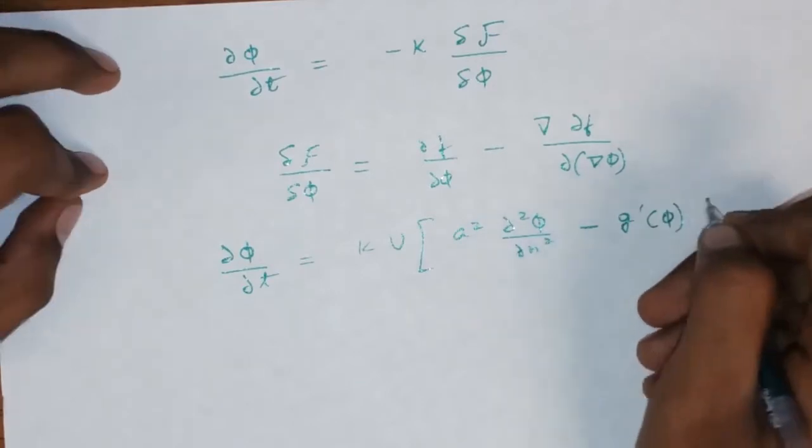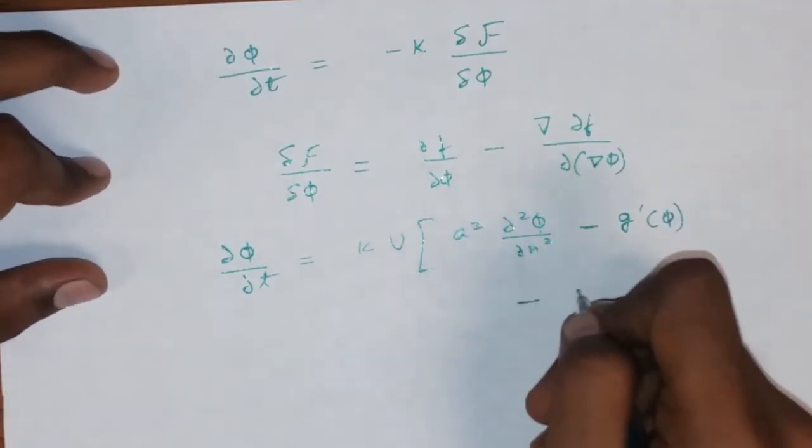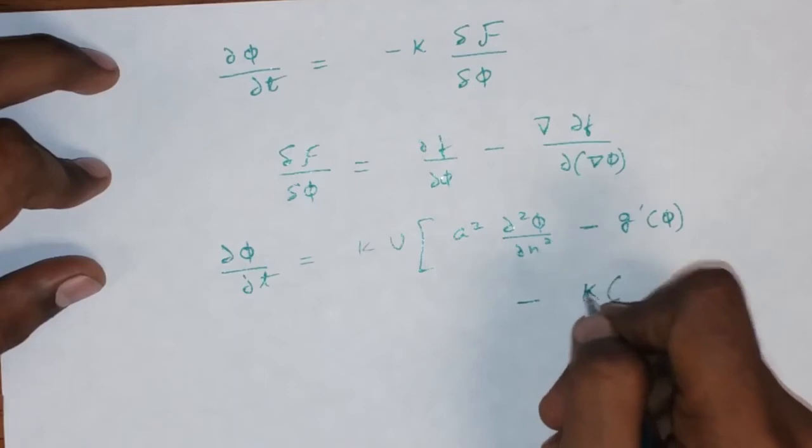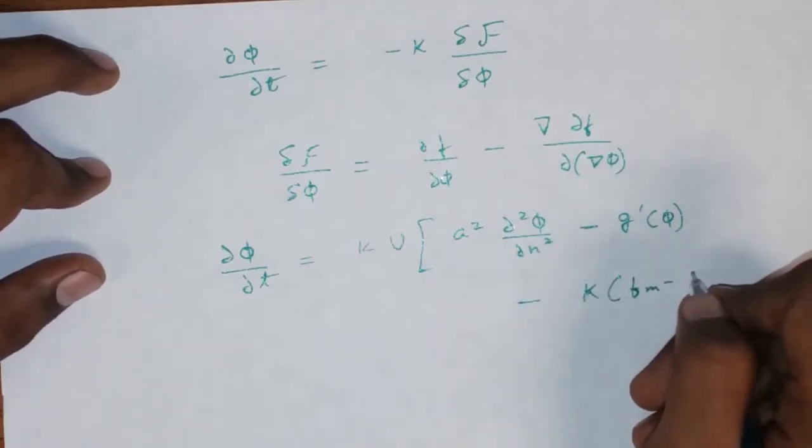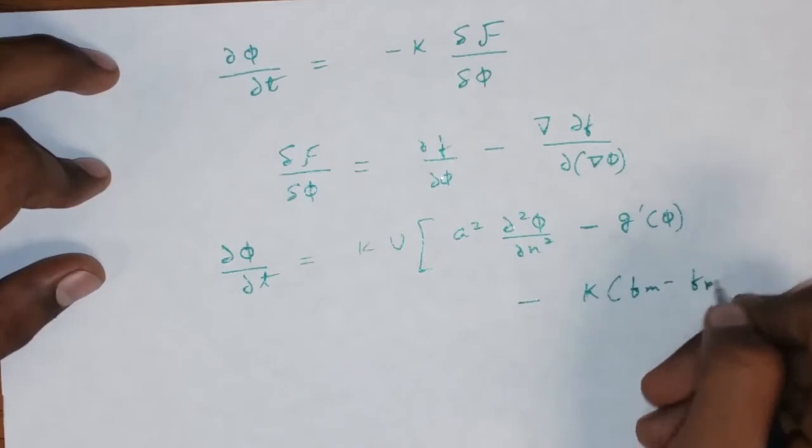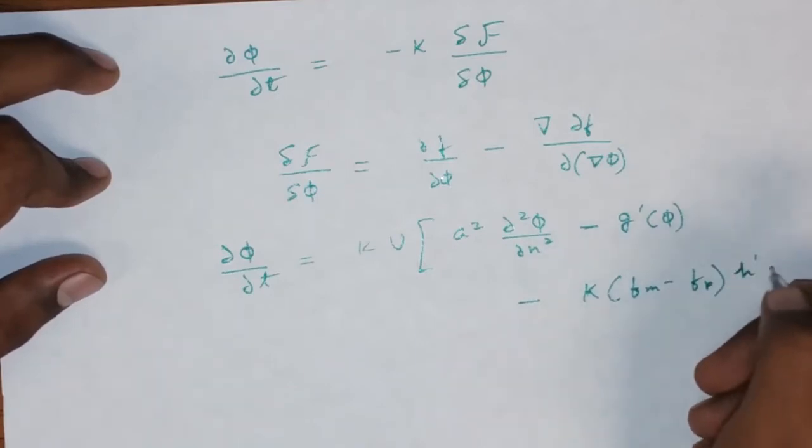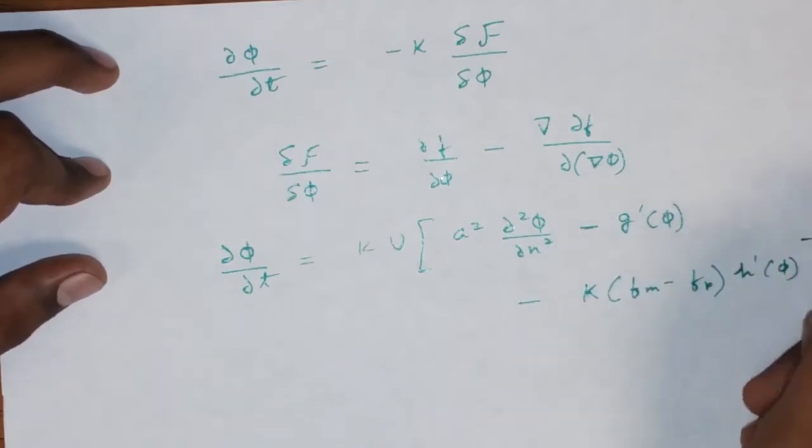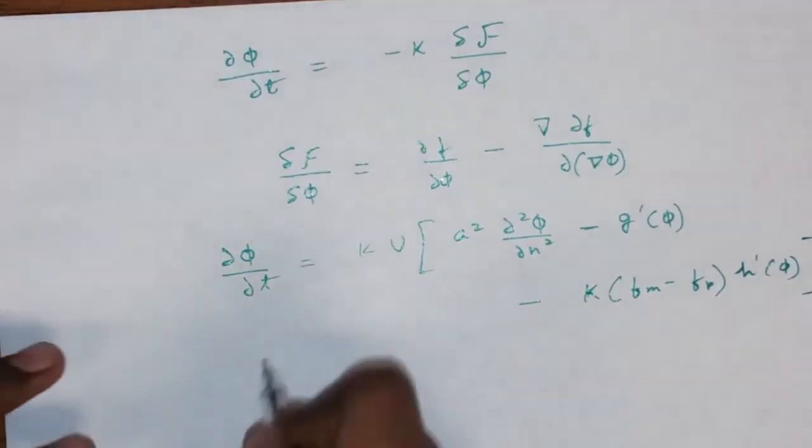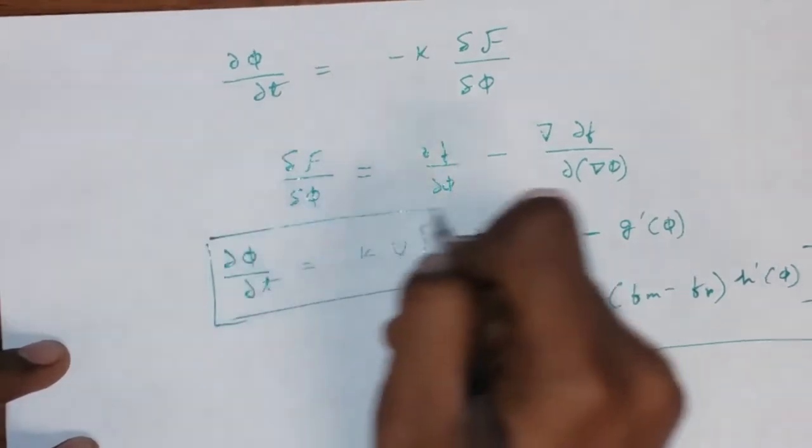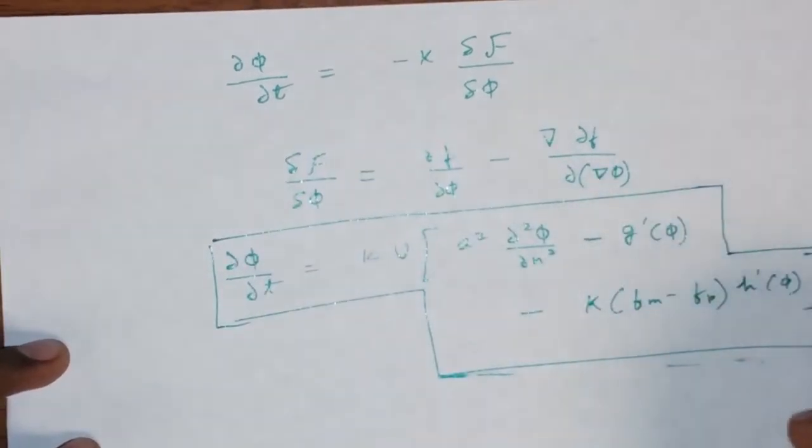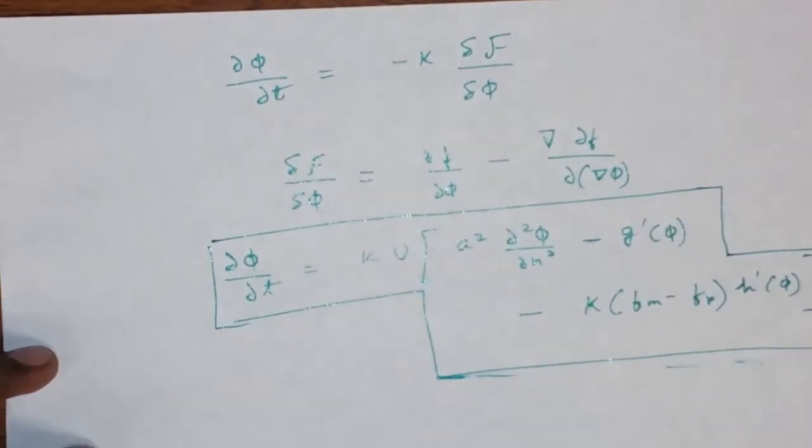So, when we use this formulation in our final equation, what we end up with is minus of K times F of one domain minus F of the other domain times H dash of phi. So, that is going to be the final Kahn-Hilliot equation.